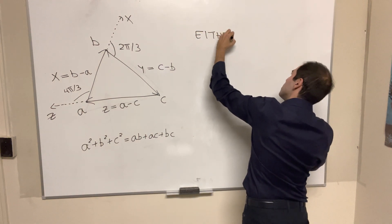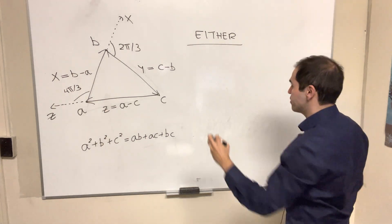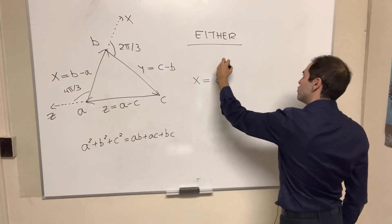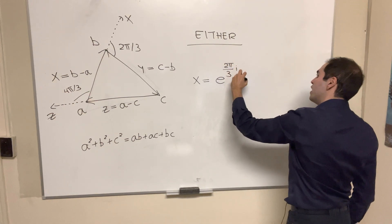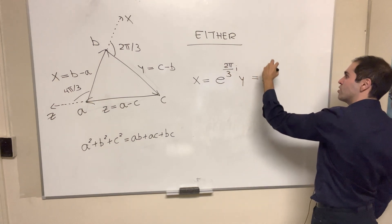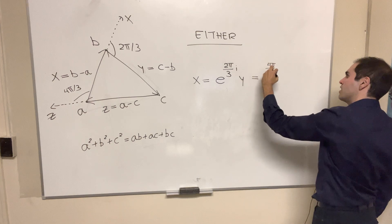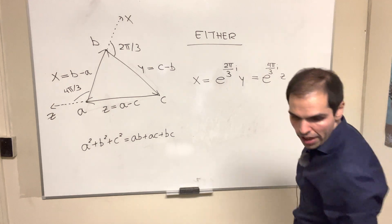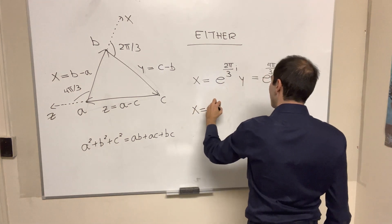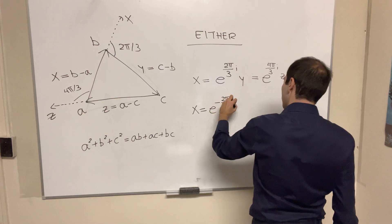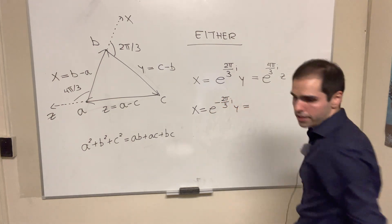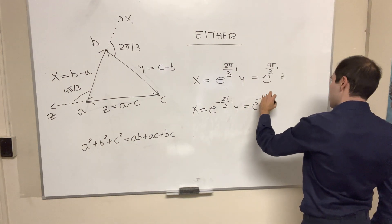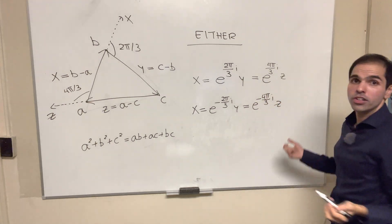Either. So x is, again, 120 degrees times y, so e of 2π over 3 i times y. Or the other way around, so x is e of minus 2π over 3 i times y, and e of minus 4π over 3 i times z. Depending on your orientation.